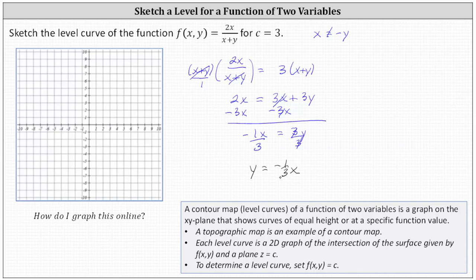But again, we do have the restriction that x can't equal negative y. For this equation, this only occurs when both x and y are zero. Which indicates the level curve is a line, but there is a hole at the origin 0 comma 0.